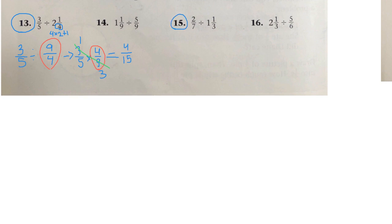Let's look at 15. 2 over 7. Now the mixed number 1 and 1/3 would be like saying 3 times 1 plus 1. 3 times 1 is 3 plus 1 is 4 over 3. And it's being divided.